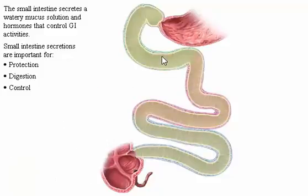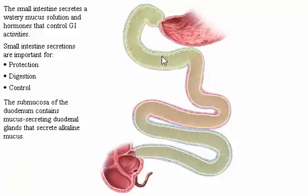The submucosa of the duodenum contains mucus-secreting duodenal glands that secrete alkaline mucus.